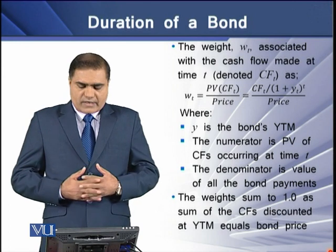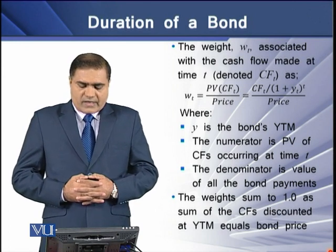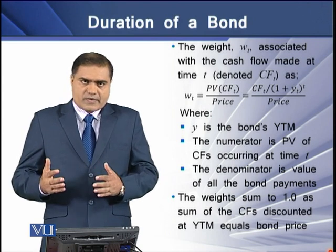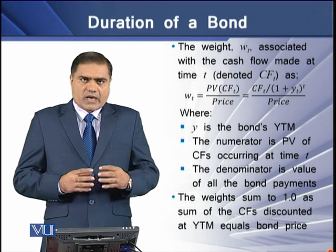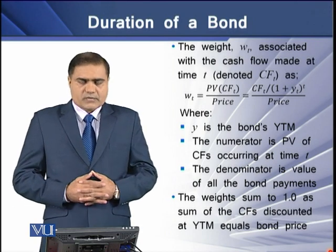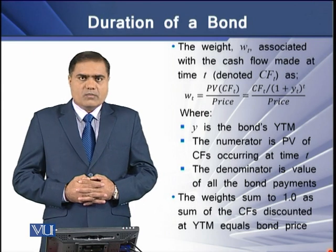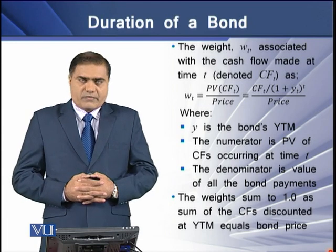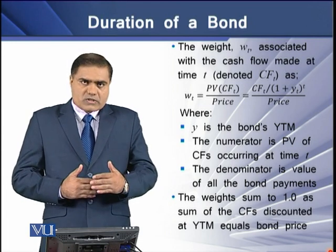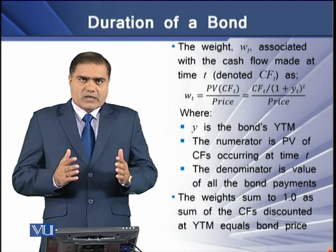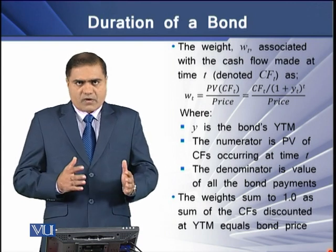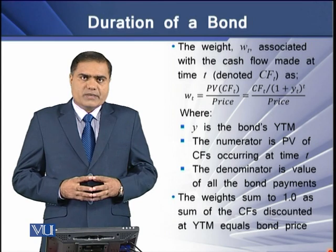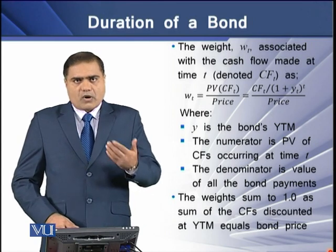In the equation shown on the screen, Y is the bond's YTM. The numerator is basically the present value of the cash flows discounted at time T. The denominator is the value of all the bond's payments, which is the fair market price of the bond. The sum of all cash flow weights equals 1, as the sum of the cash flows discounted at YTM equals the bond's market price.